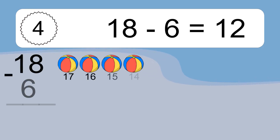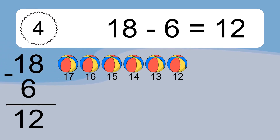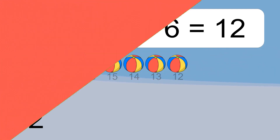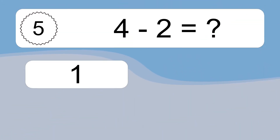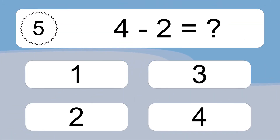18 minus 6 equals what? 18 minus 6 equals 12. Let's count it: 17, 16, 15, 14, 13, 12.